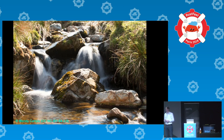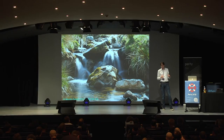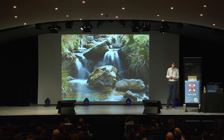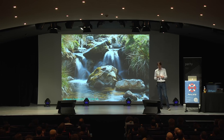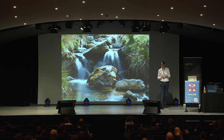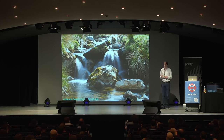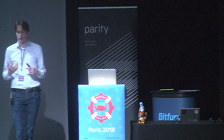A core idea in QUIC is that of streams. You have a very large number of streams — I think two to the power of 62 or something — so it should be enough for most people. There are four different types of streams: streams are either client-initiated or server-initiated, and they are either bidirectional or unidirectional. This allows some optimizations of how you handle those streams, and it's encoded by having the least significant bits of the stream ID represent the stream type.